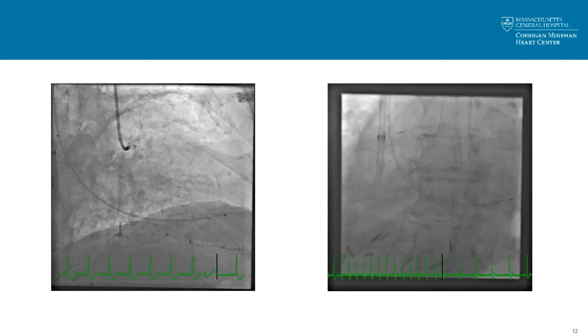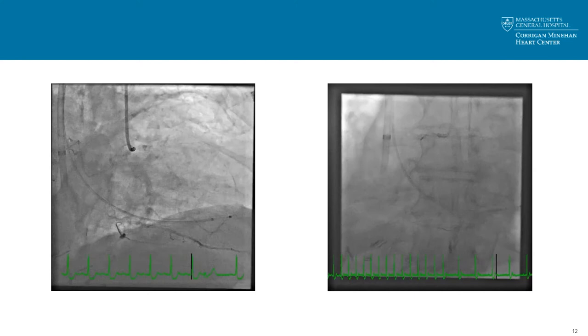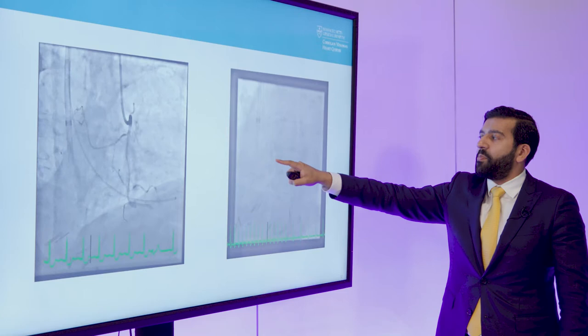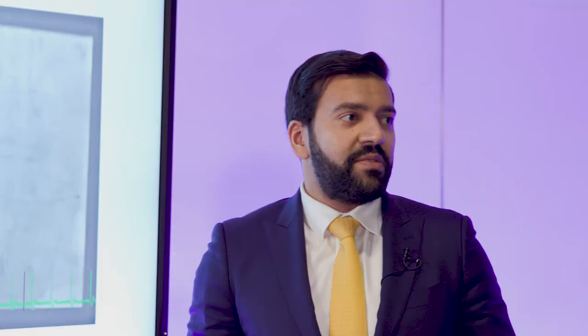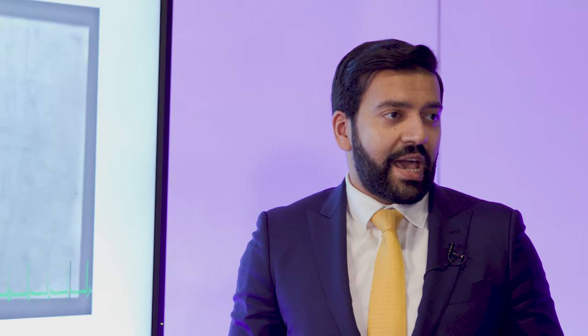Here again is the area we want to target — this is the rotational atherectomy we're doing. It's a 1.25 burr — a bullet shape, not a football shape — using small pecking motions as we get close to the lesion to make sure there are no decelerations. My starting RPM is usually around 160 to 170K; if I'm having trouble crossing, I increase to 200 or even 220K. We went at 170K, and the main thing is not to have decelerations less than 20K. We did several passes and were ultimately able to get through the calcium.